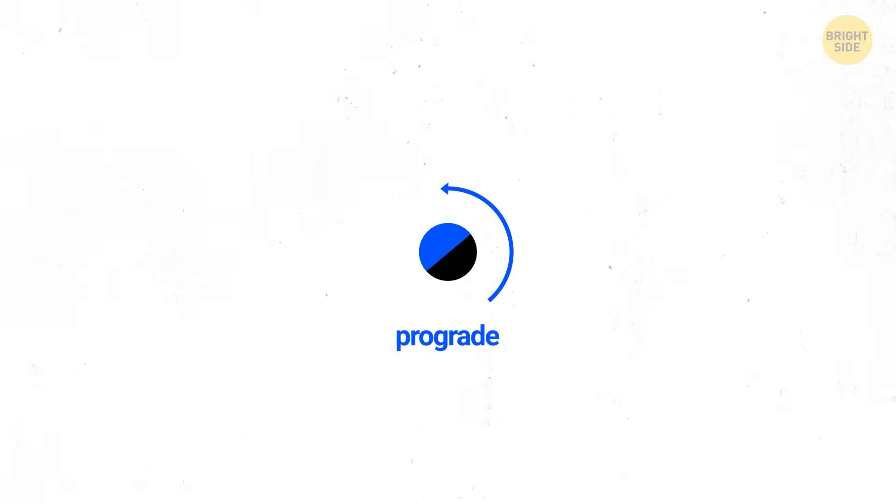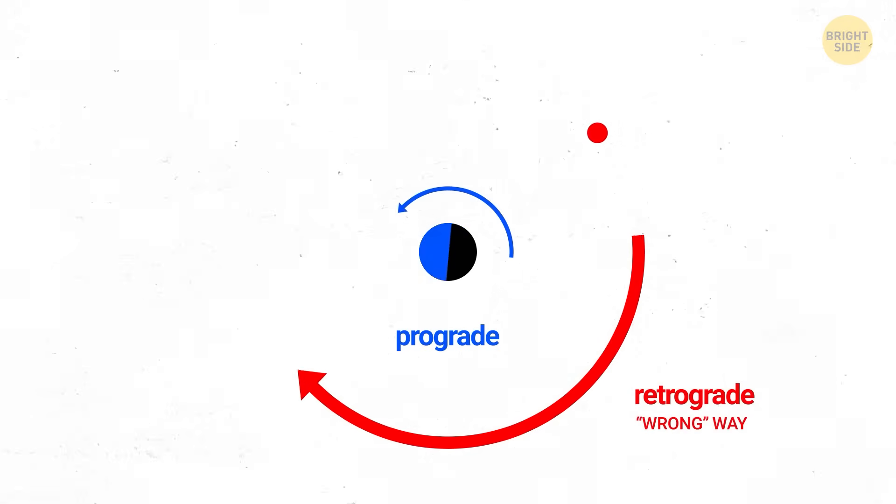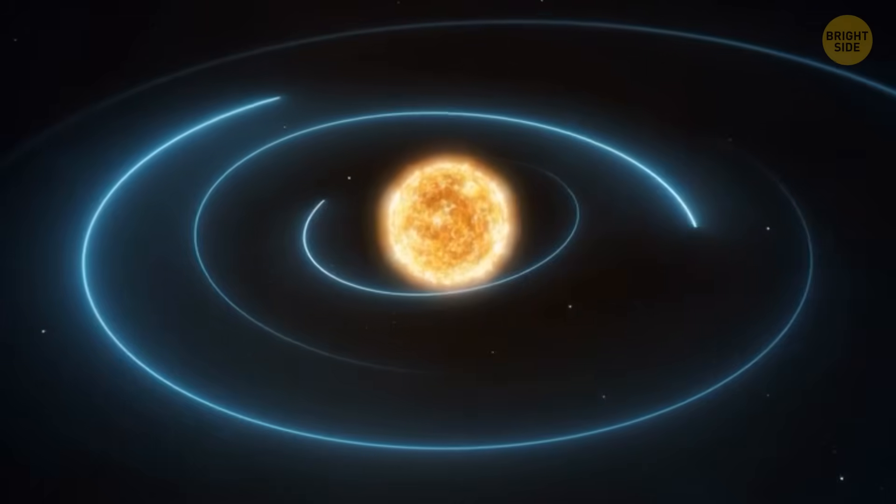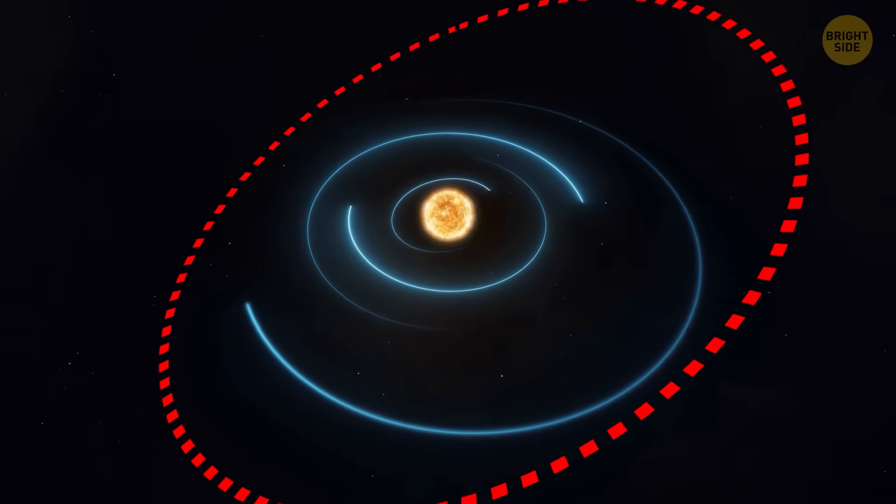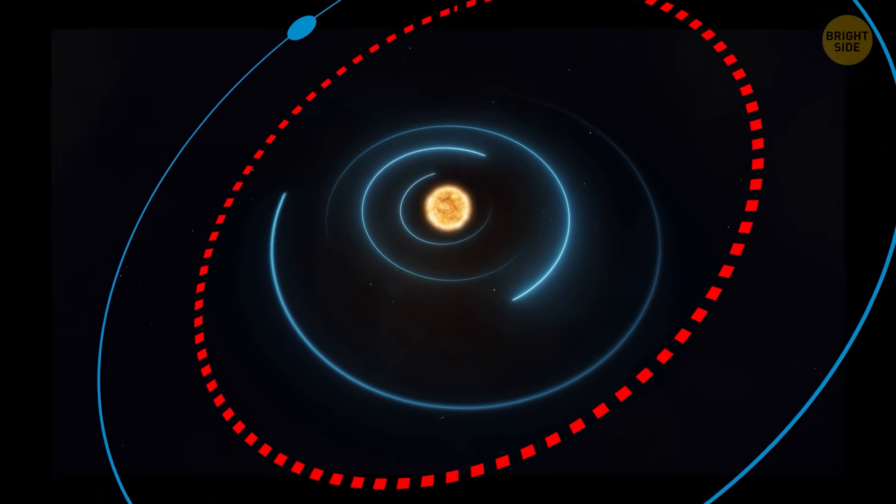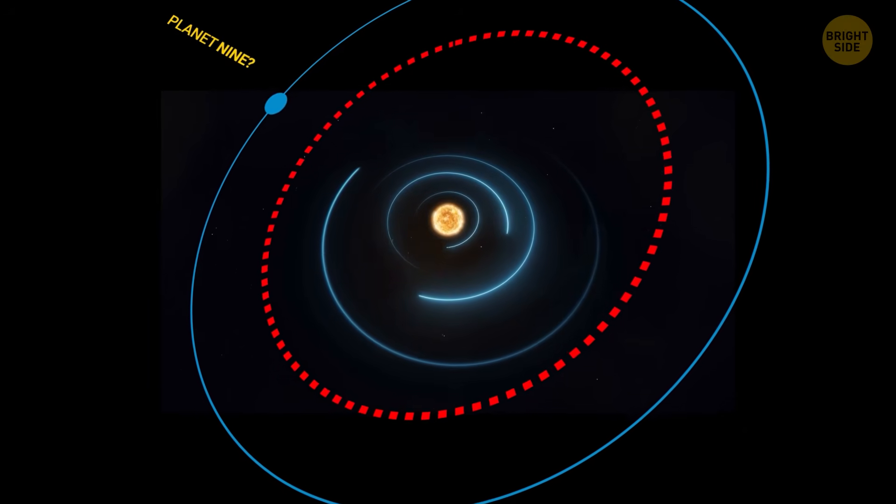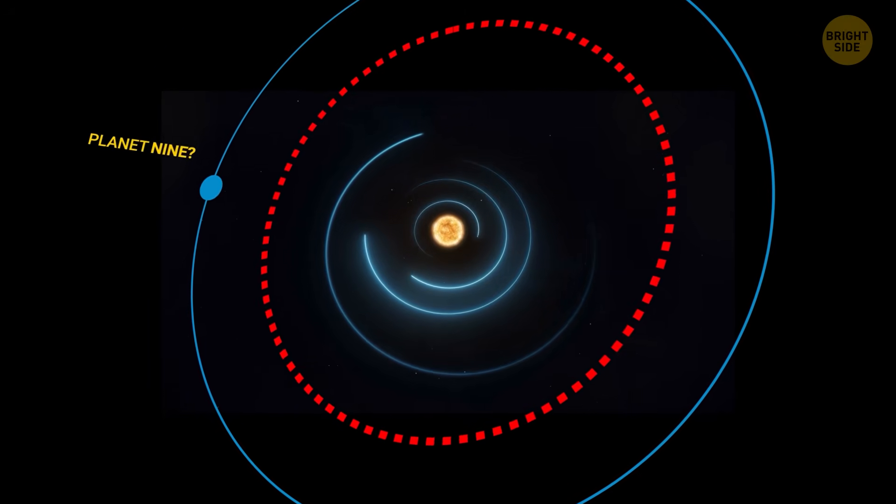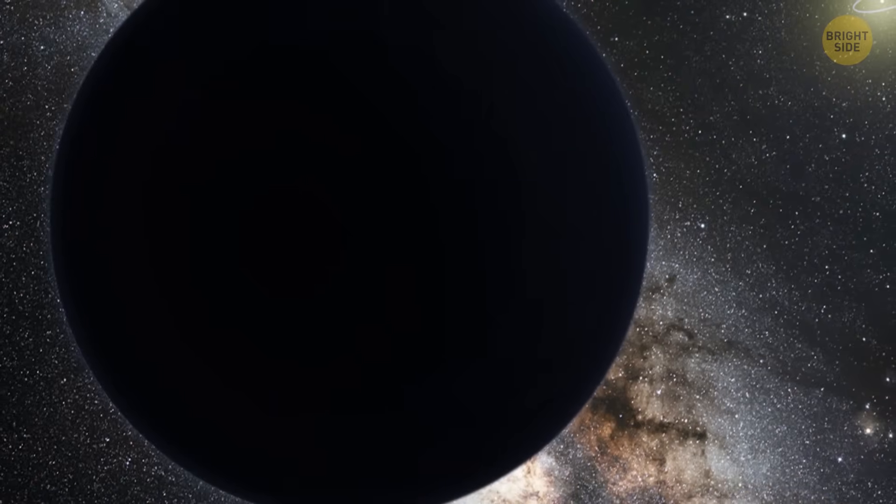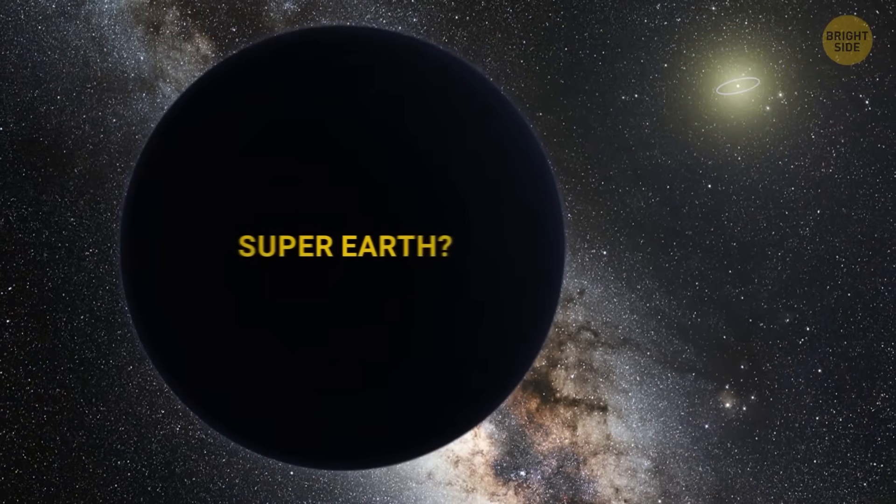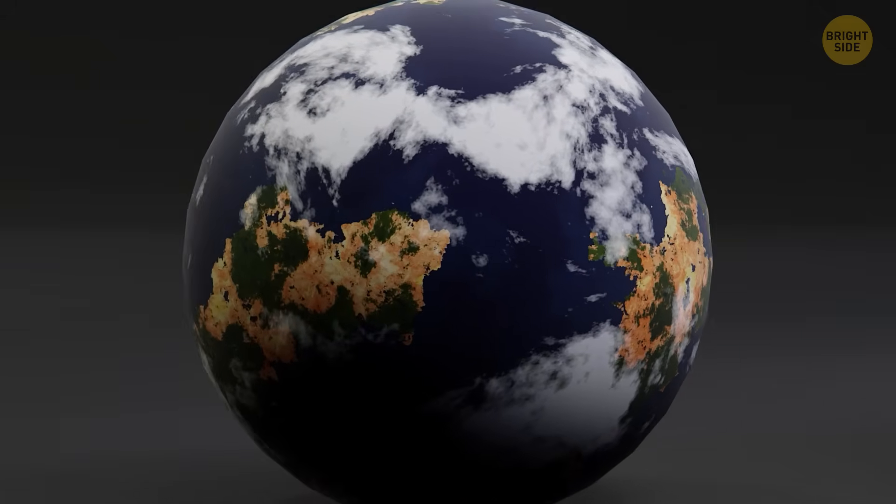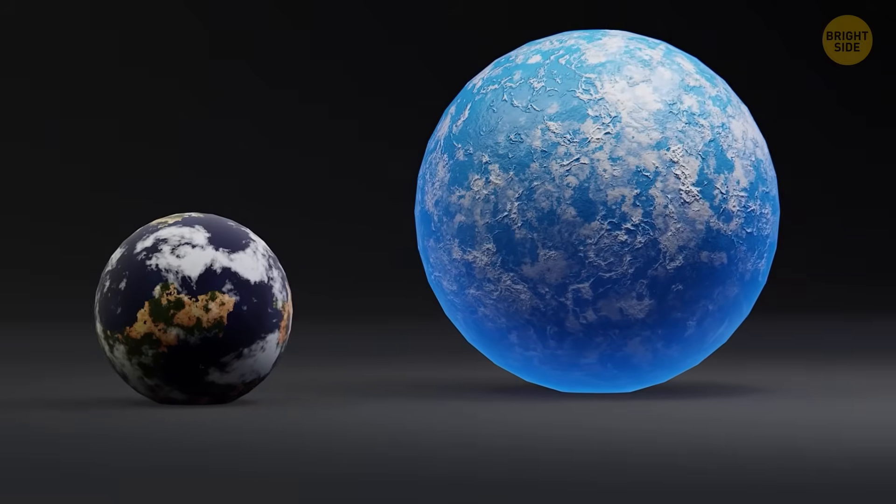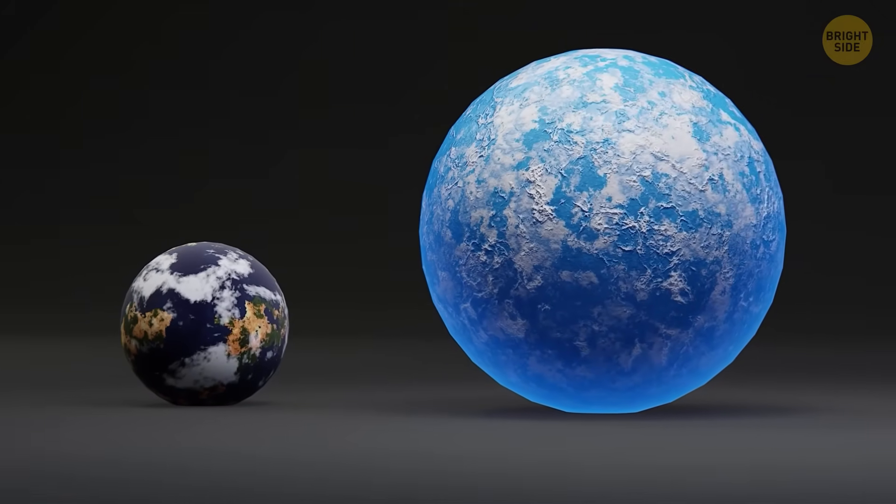A few space rocks orbit the Sun backward between the big planets, which is kind of the wrong way. That's super weird unless something big is messing with them. Some far-out Kuiper Belt objects keep crossing Neptune's path and haven't been flung away. That's because Planet 9 might be helping keep their orbits stable over a long time. Another cool thing is that if Planet 9 existed, it would be a super-Earth, a kind of planet we see a lot around other stars but we don't have in our solar system yet. So finding one here would make our solar system more like the others out there.